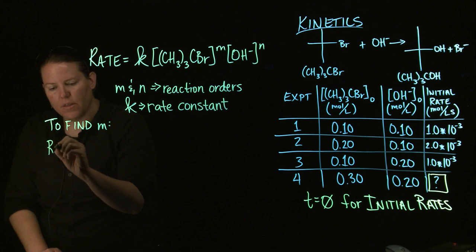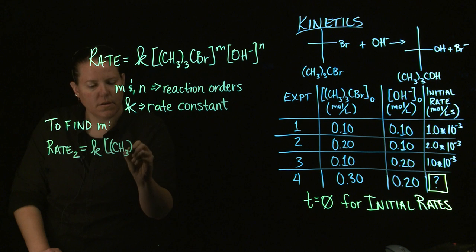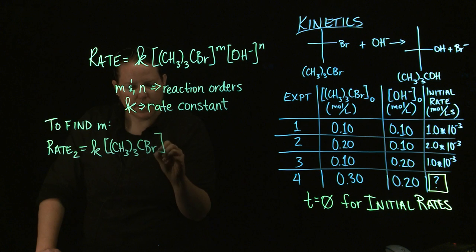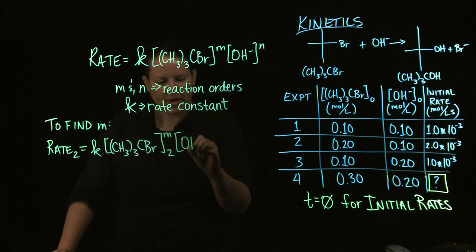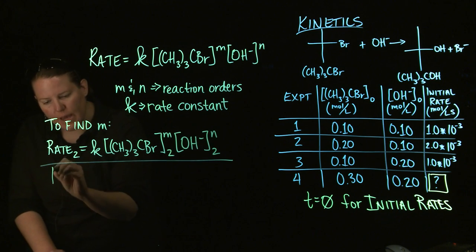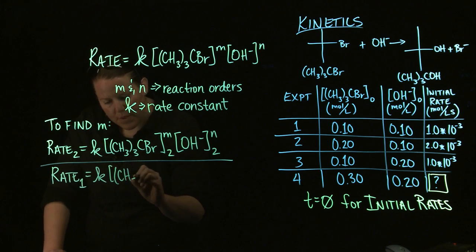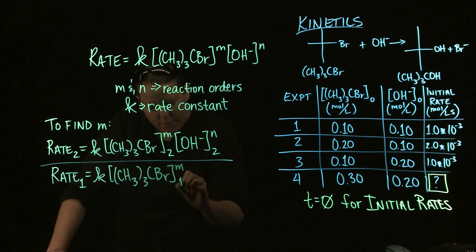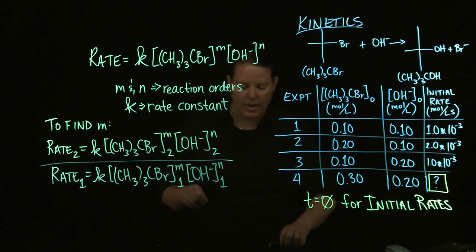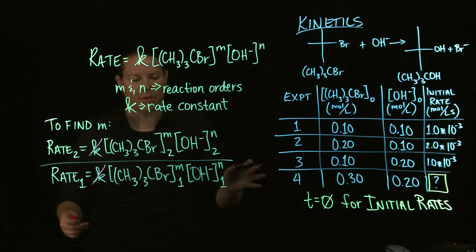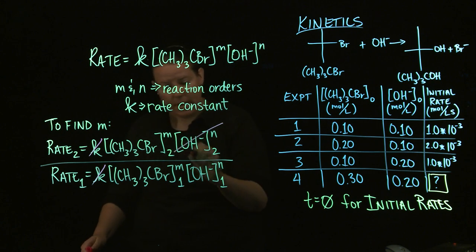Essentially what I'm going to do is put the rate of experiment 2 over the rate of experiment 1. Rate 2 equals K times [reactant]₂ to the M power times [OH⁻]₂ to the N power, divided by rate 1 equals K times [reactant]₁ to the M power times [OH⁻]₁ to the N power. Lo and behold, the K's cancel out because it's a constant at the same temperature. OH⁻ is the same number both times, so the same number divided by the same number is 1 — those cancel out too.